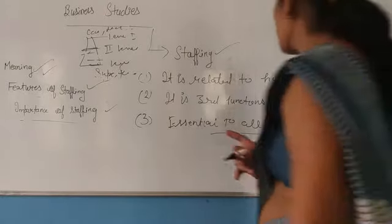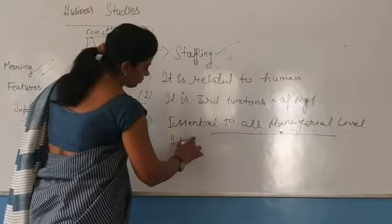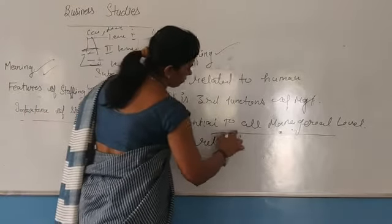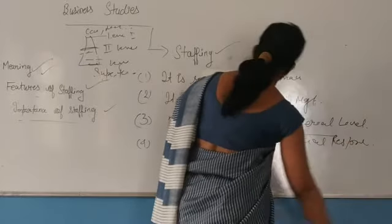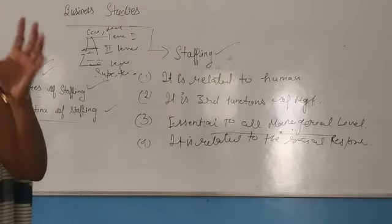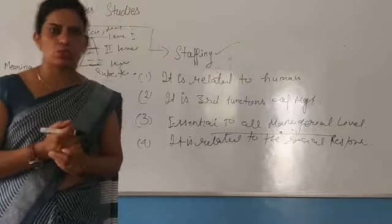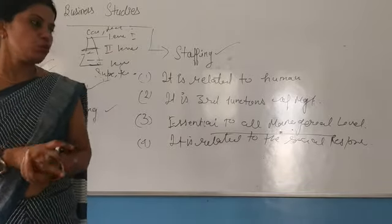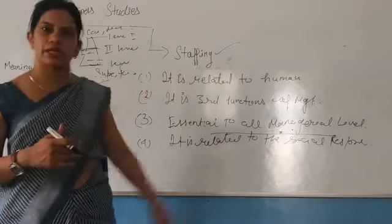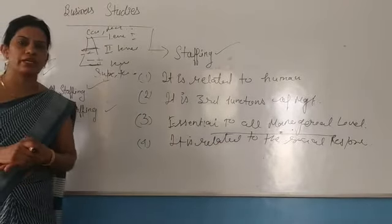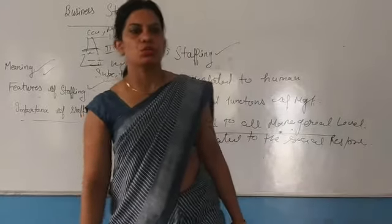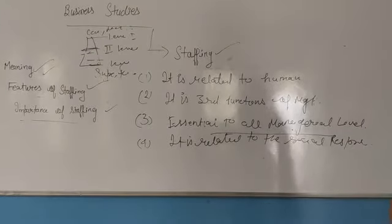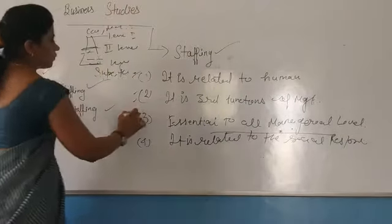The fourth feature is that staffing is related to social responsibility. You know, in your previous class, in the very first chapter, you had the objectives of business — the social objectives of business include providing employment. Employment is provided through staffing. So staffing is the activity that fulfills the social responsibility of management.